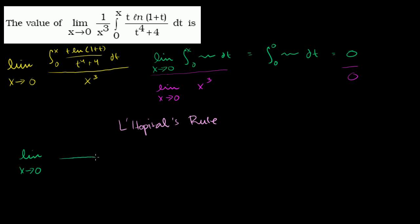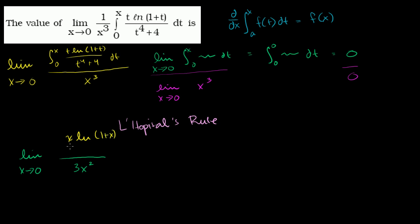Let's do the denominator first since that's easier. The derivative of x to the third is just 3x squared. For the numerator, by the Fundamental Theorem of Calculus, the derivative with respect to x of the integral from some constant to x of f(t) dt is just f(x). So the derivative of the numerator is just the integrand expressed in x: x times natural log of 1 plus x, all over x to the fourth plus 4.